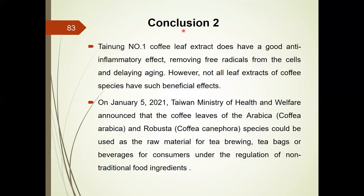In conclusion for the second part: Tainone No. 1 coffee leaf extract has good anti-inflammatory effects, can remove free radicals from cells, and can delay cell aging. However, not all coffee leaf extracts from all species have such beneficial effects. Based on our work, the Taiwan Ministry of Health and Welfare on January 5, 2021 announced that coffee leaves of Arabica and Robusta species could be used as raw materials for tea brewing, tea bags, or beverages under the regulation of non-traditional food ingredients.